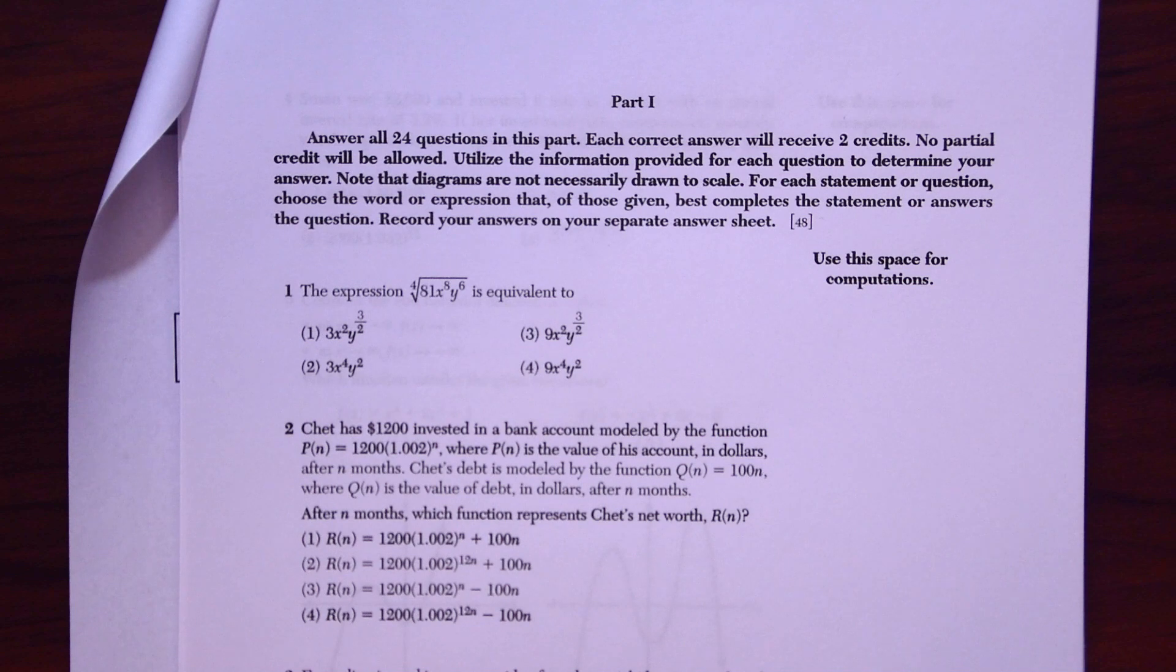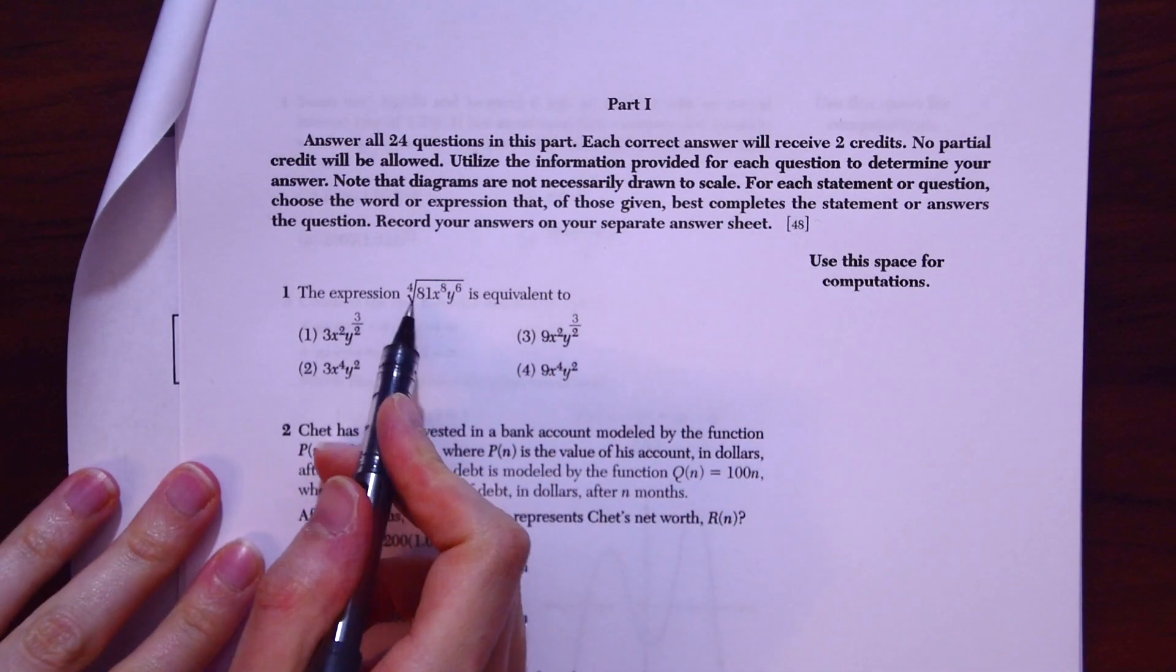For this first question here we have the quad root of 81 times x to the 8th times y to the 6th. So since we have the quad root,